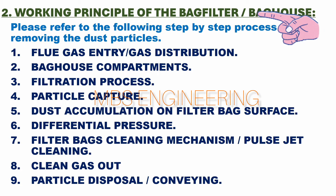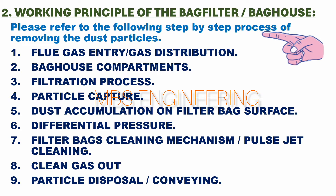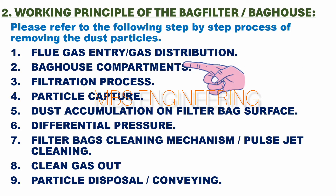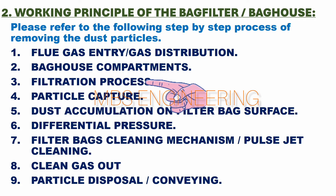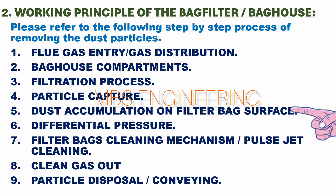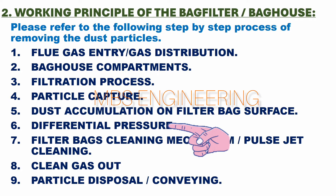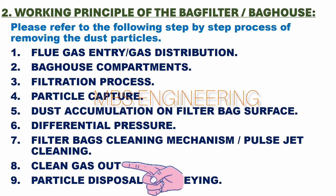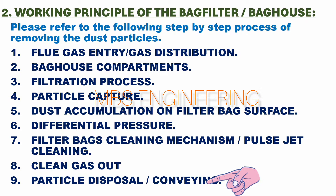We will now learn the pulse jet bag house or bag filter working principle step by step. The nine steps are: Step 1, flue gas entry; Step 2, bag house compartments; Step 3, filtration process; Step 4, particle capture; Step 5, dust accumulation on filter bag surface; Step 6, differential pressure; Step 7, filter bag cleaning mechanism — pulse jet cleaning; Step 8, clean gas out from the filter; Step 9, particle disposal and conveying.